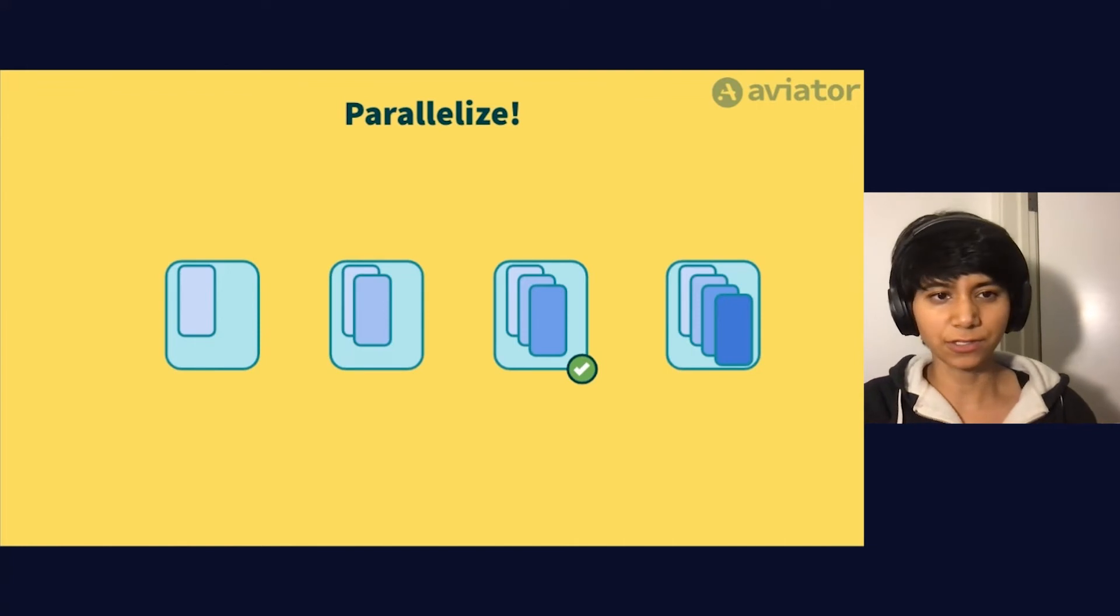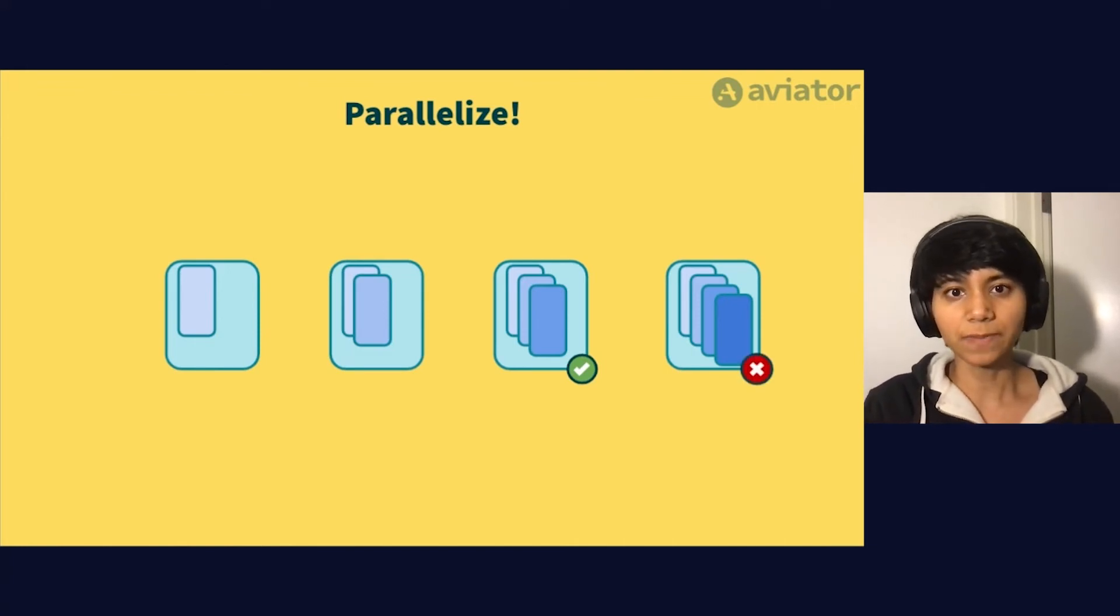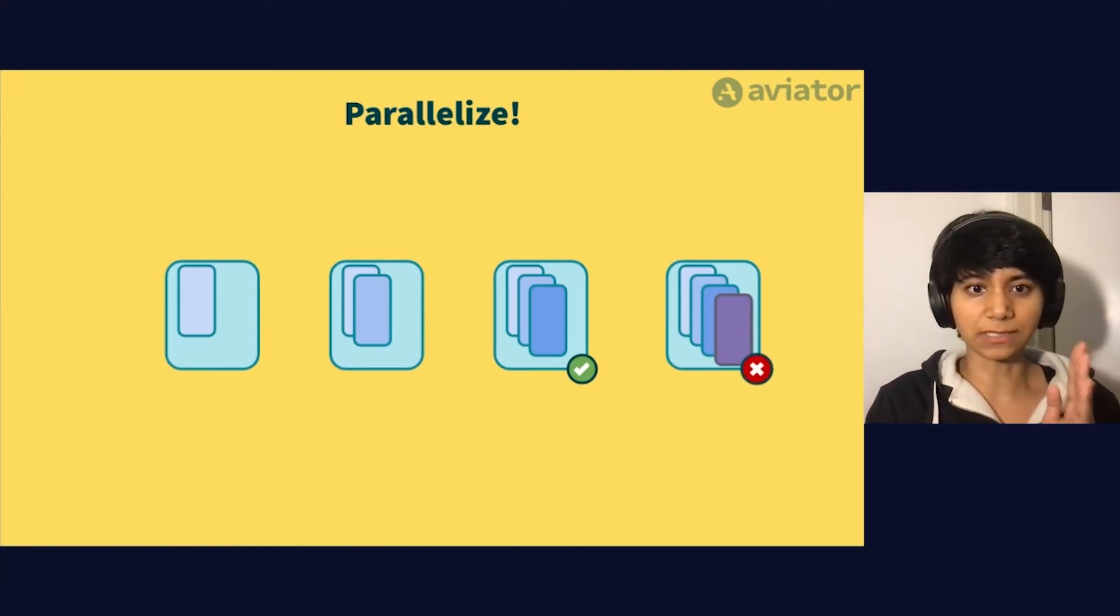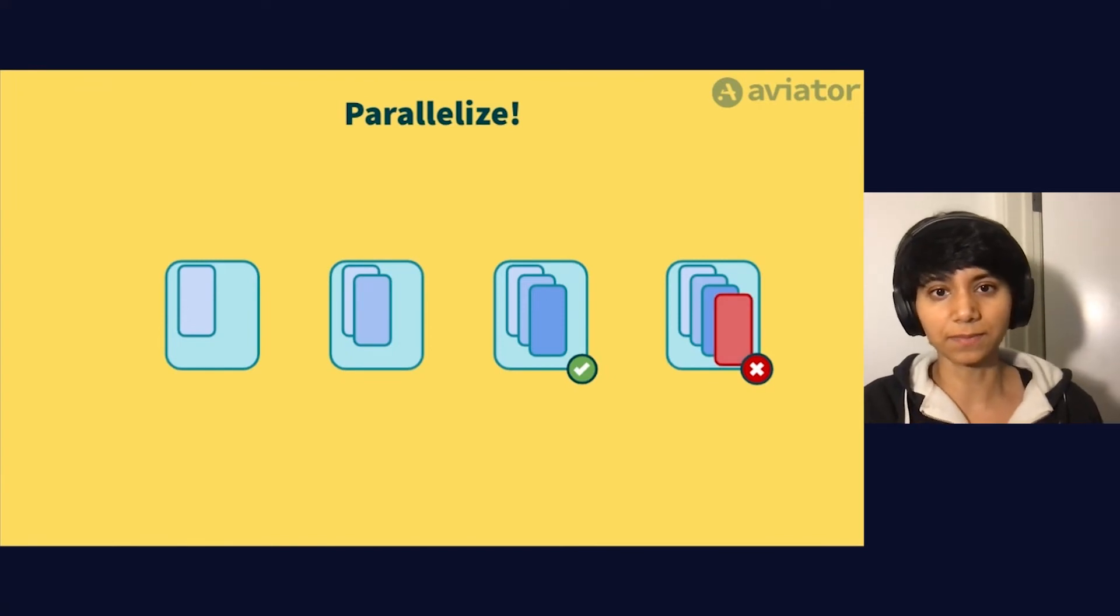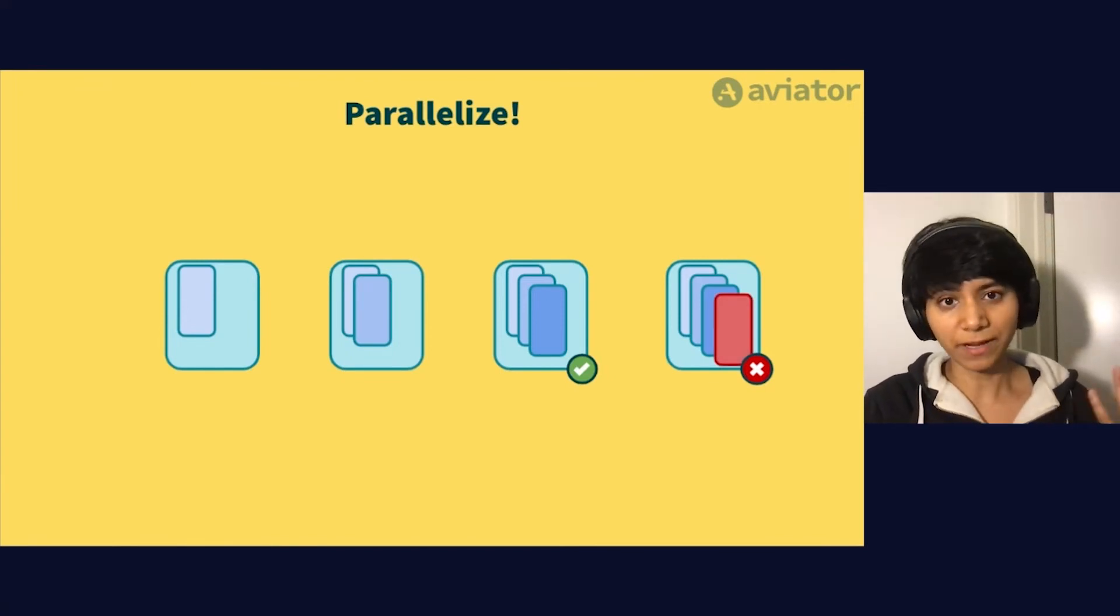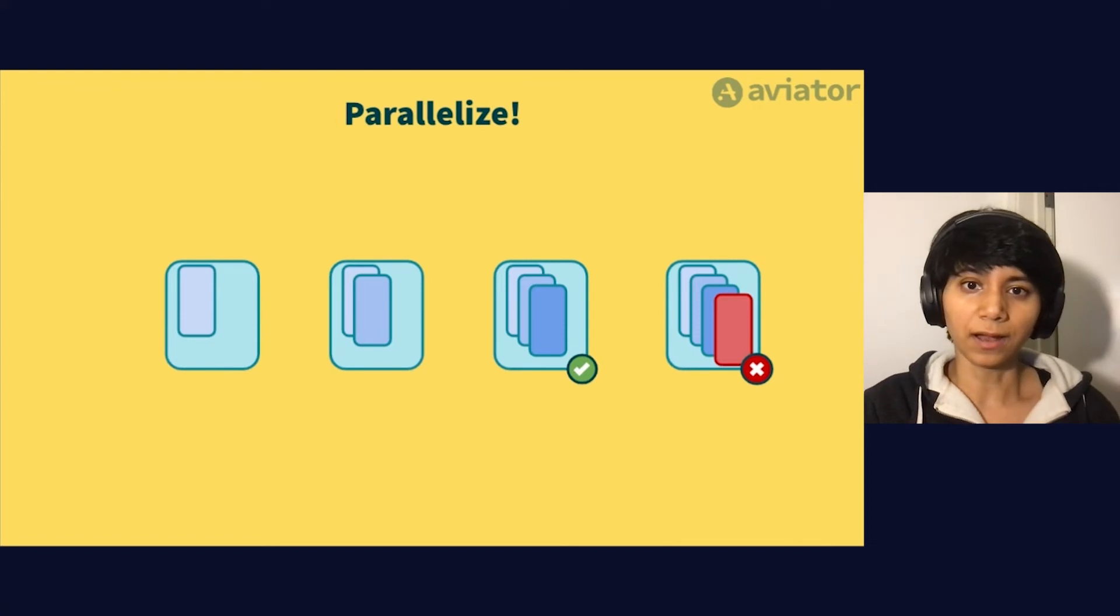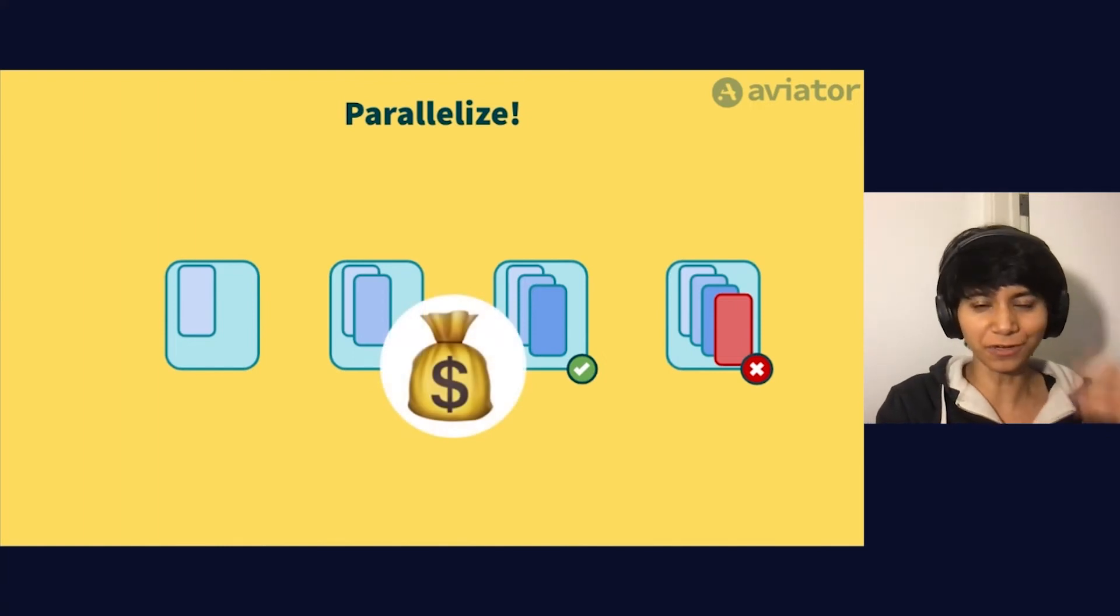And it's way easier to triangulate a failing PR just by looking at the difference between batches that contain the PR and batches that don't contain the PR. This also works a lot better. Things are a lot faster now. But you realize that your finance department is not too happy with you because your CI costs have just shot through the roof.